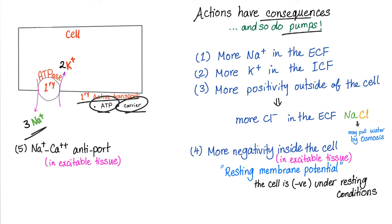Potassium affects the resting membrane potential. Disturbances in potassium cause membrane potential problems. In the heart, this is called arrhythmia (a = no, rhythmia = rhythm). Mnemonic: Kalium (potassium) → cardiac problems.